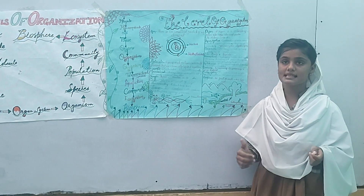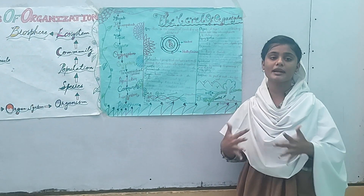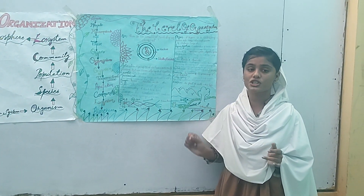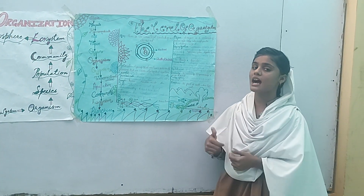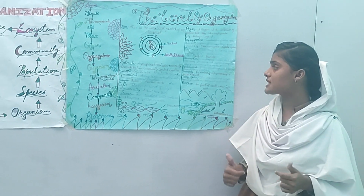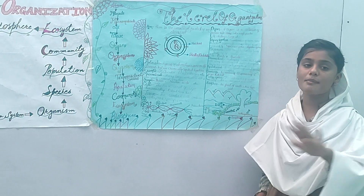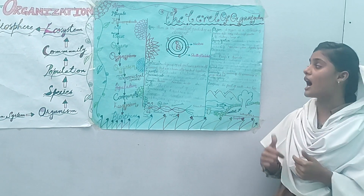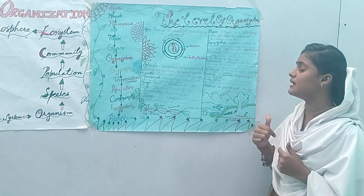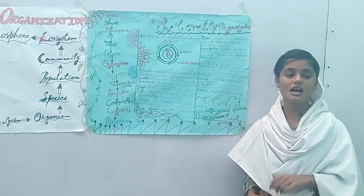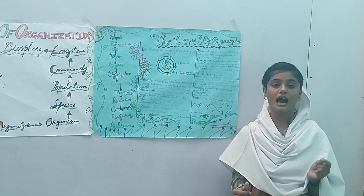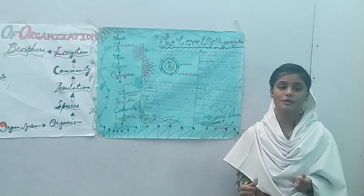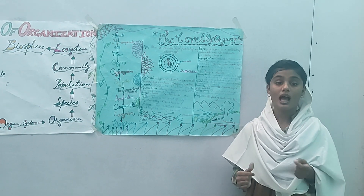Species: a group of similar interbreeding living organisms which reproduce and produce fertile offspring is called a species. Population level: all the members of the same species living in a specific habitat is called a population. Community: members of different species that live in a specific habitat is called a community.